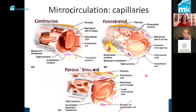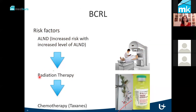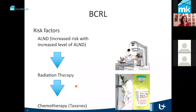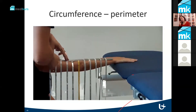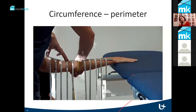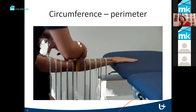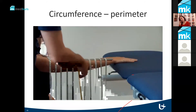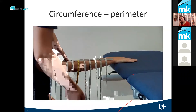Of course, we assess both arms so that we can make a comparison, and we note in the Excel file the circumferences that we have measured. Radiation therapy adds to the risk.